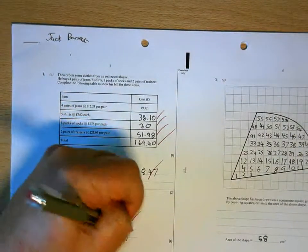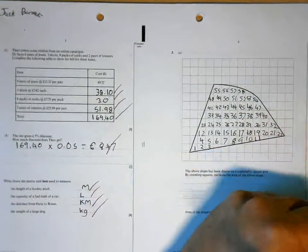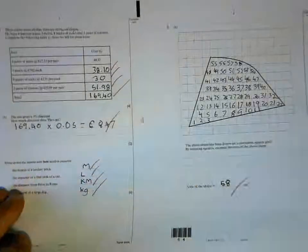Metres, litres, kilometres, kilograms, 58. Full marks on the first page. Can't ask for more than that.